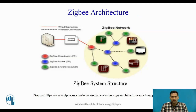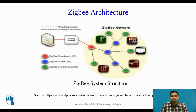Now we will see Zigbee architecture. The figure shows the Zigbee system structure. Generally there are two types of connections: wired connection and wireless connection. There is one existing network, to which one Zigbee coordinator is connected, and that Zigbee coordinator is connected with Zigbee routers as well as Zigbee end devices. The coordinator acts as a master, and routers transmit or receive data to or from slave devices.